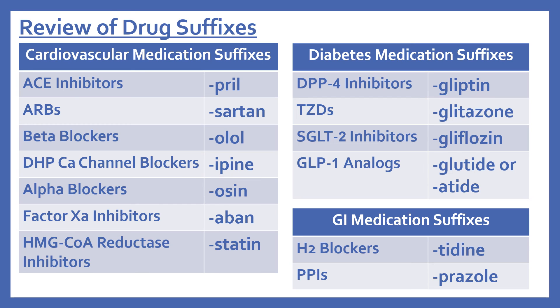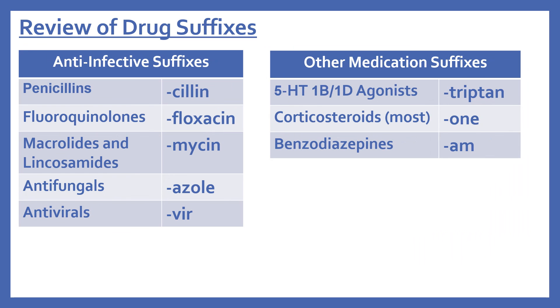For GI or stomach medications: H2 blockers end in -tidine, and PPIs end in -prazole. For anti-infective suffixes: penicillins end in -cillin; fluoroquinolones end in -floxacin; macrolides and lincosamides end in -mycin — these three are antibiotics. Antifungals end in -azole, and antivirals end in -vir. For other medication suffixes: 5-HT1B/1D receptor agonists for migraine end in -triptan; corticosteroids mostly end in -one; and benzodiazepines end in -am.